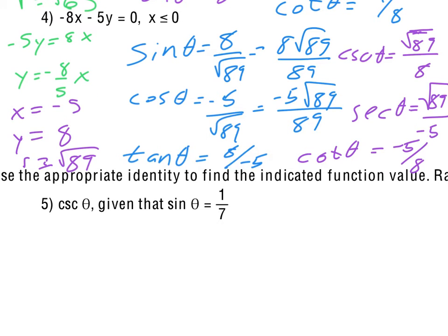With x, y, and r known, we find the six trig functions. Sine of theta, Y over R, is 8 over the square root of 89, which rationalizes to 8 square roots of 89 over 89. Cosine, X over R, is negative 5 over the square root of 89, rationalizing to negative 5 square roots of 89 over 89. Tangent of theta is 8 over negative 5. The cosecant and secant are the reciprocals of sine and cosine respectively, and cotangent is negative 5 eighths.